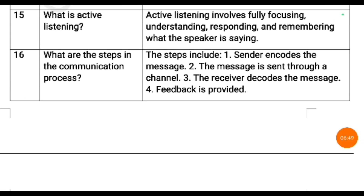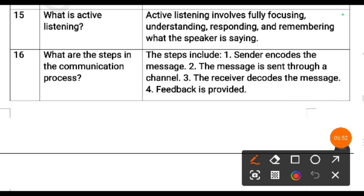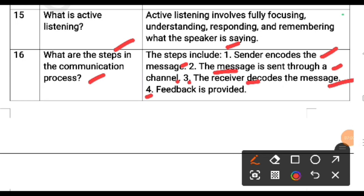What are the steps in the communication process? First step: the sender encodes the message. Second step: the message is sent through a channel. Third step: the receiver decodes the message. Fourth step: feedback is provided by the receiver.